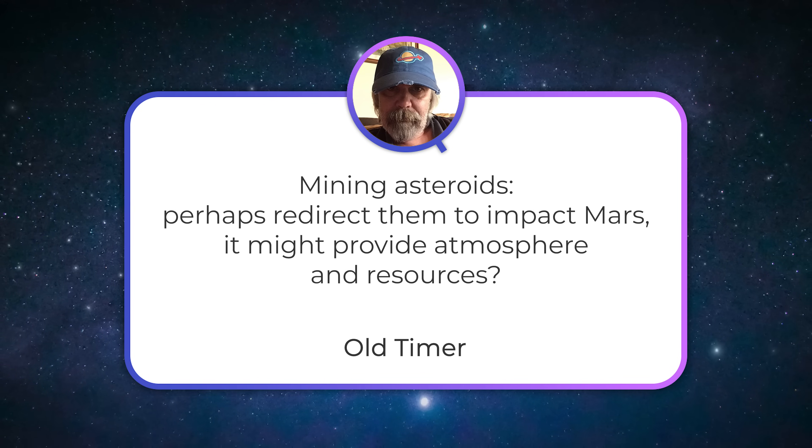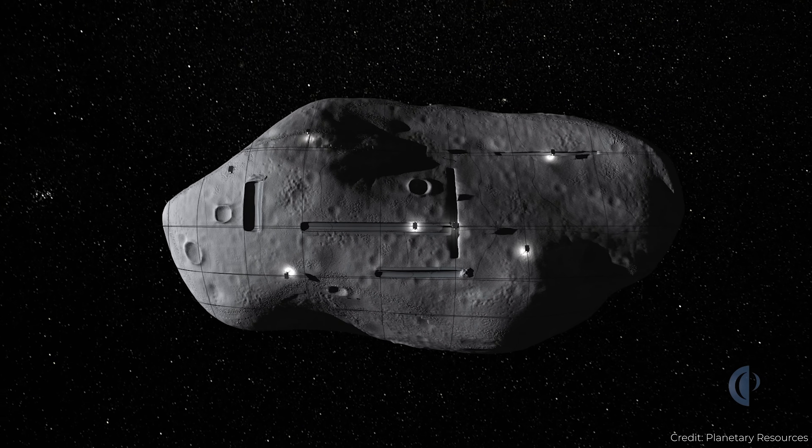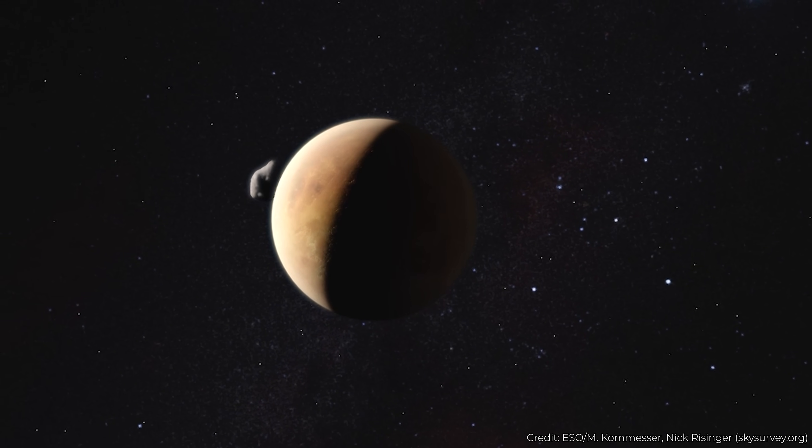Old timer: mining asteroids, perhaps redirecting them to impact Mars might provide atmosphere and resources. That's two separate things. On the one hand, we could mine asteroids, and in the coming decades I'm sure someone will attempt to mine one. By mining asteroids, one interesting thing you can do is set up mass drivers on the surface of the asteroid, and then start firing out mass from it — maybe sending it to some collector refining facility in the solar system. As you do so, you're giving the asteroid a kick in the opposite direction, which lets you change its orbit. You could set up mining operations on threatening asteroids and change their orbits into whatever you want. The proposal here is: why don't we just crash them into Mars?